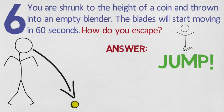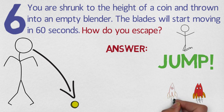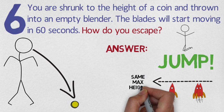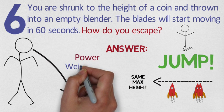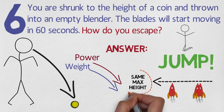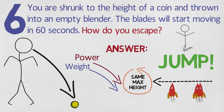The answer? Jump. If you have ever played with rockets, you may know that 2 rockets strapped together do not go higher than a single rocket because while you have doubled the power, you have doubled the weight. By the same principle, if you were shrunk but your power and weight remained in the same proportion, then the height you can jump is the same. Thus, you could jump out.